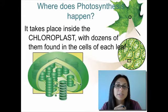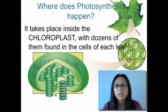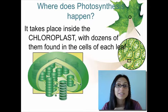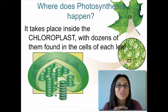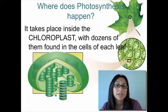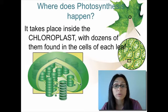So where does photosynthesis happen? We know it happens in the leaves. If we were to take a really close look at the leaves, we would see that each cell has dozens of chloroplasts inside — not just one chloroplast. We're usually used to drawing one or three chloroplasts in a plant cell in diagrams, but in reality each cell has dozens of chloroplasts, and each one is going to undergo photosynthesis.